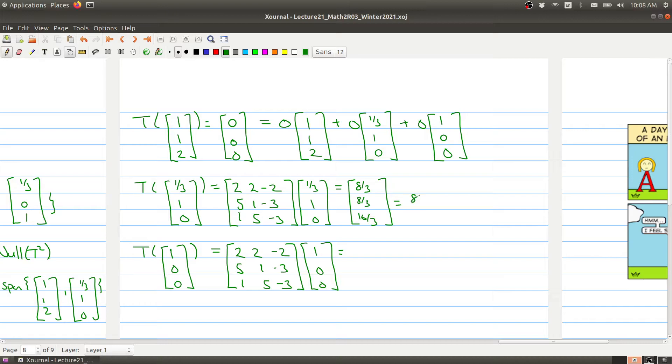what you get is 8/3 times the first vector, 1, 1, 2, plus 0 times the second basis element, 1, 1/3, 1, 0, plus 0 times the last basis vector.